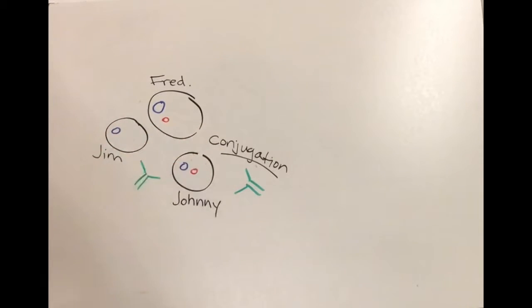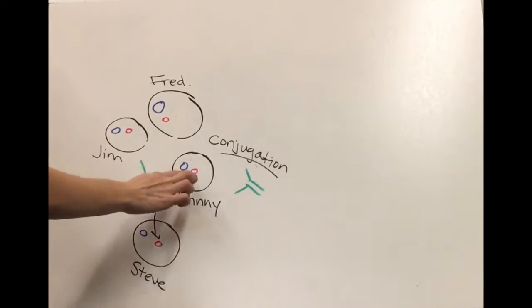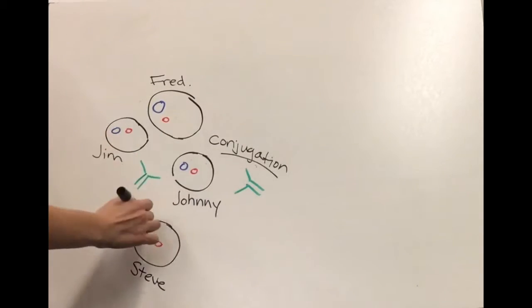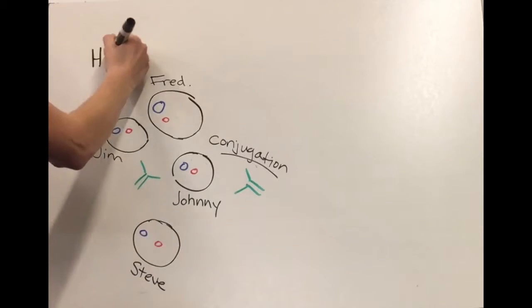Now, both Fred and Johnny can keep making copies of their MCR1 genes and give them to all of their friends. In this way, colistin resistance can spread throughout the entire bacterial population. This process of spreading a gene throughout the same generation is called horizontal transmission.